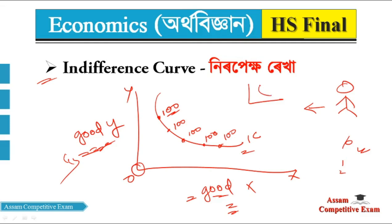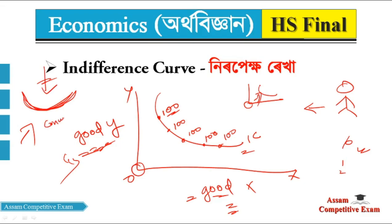If this curve represents the same level of satisfaction, suppose a consumer has 100 units of utility satisfaction — that means each and every point of the curve represents a 100 level of satisfaction. So the indifference curve is convex, and this is the concept to make clear.